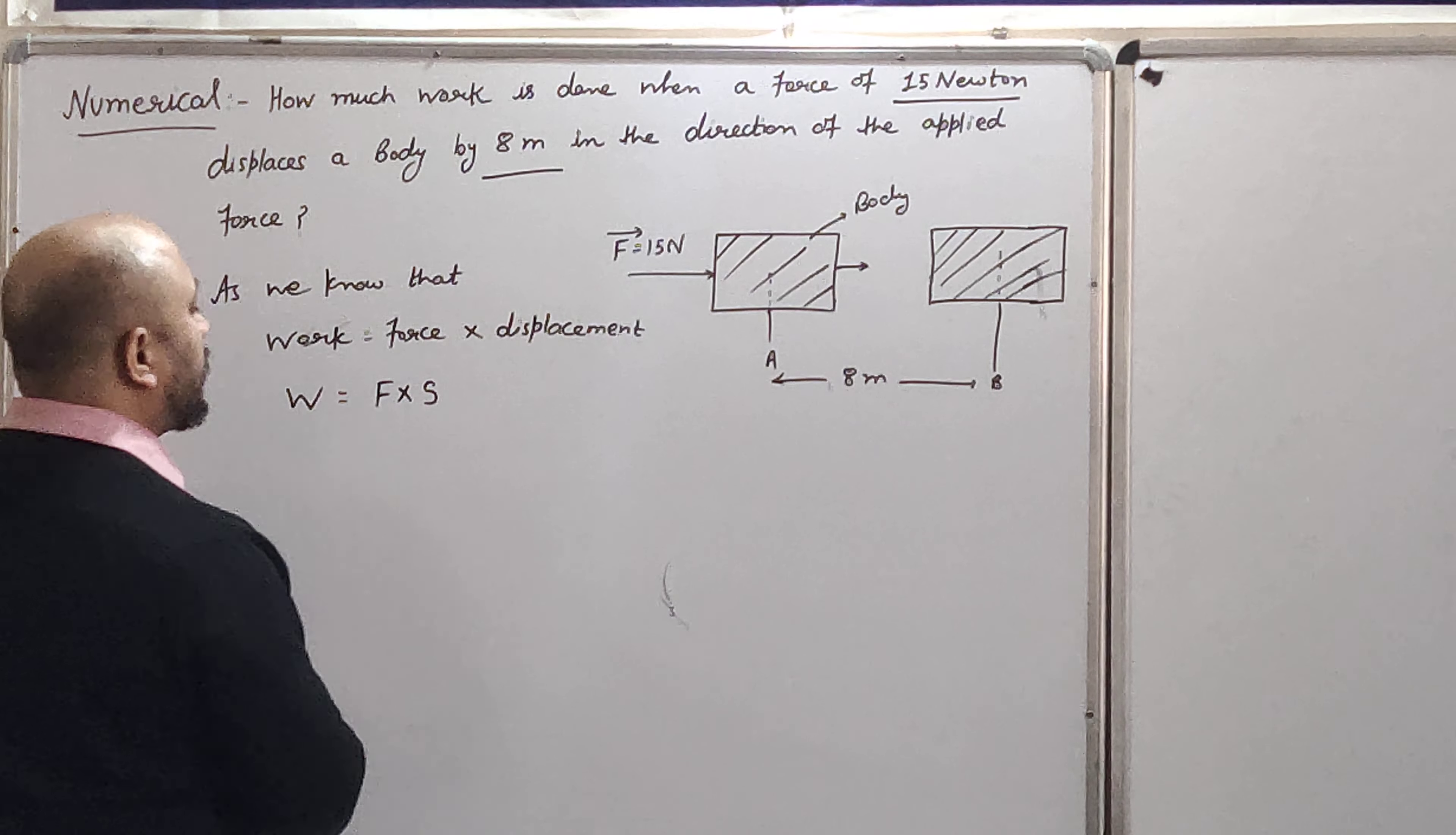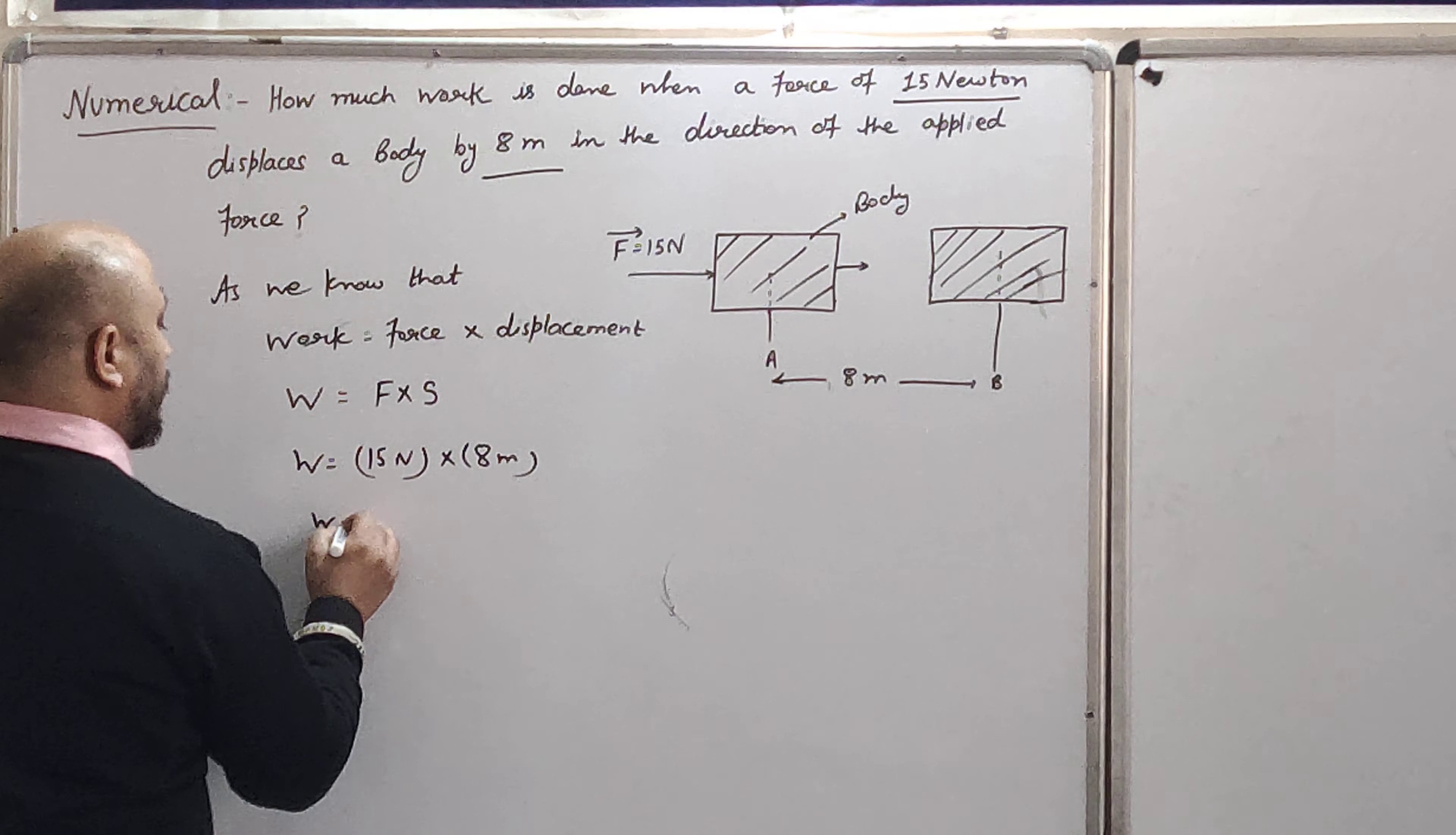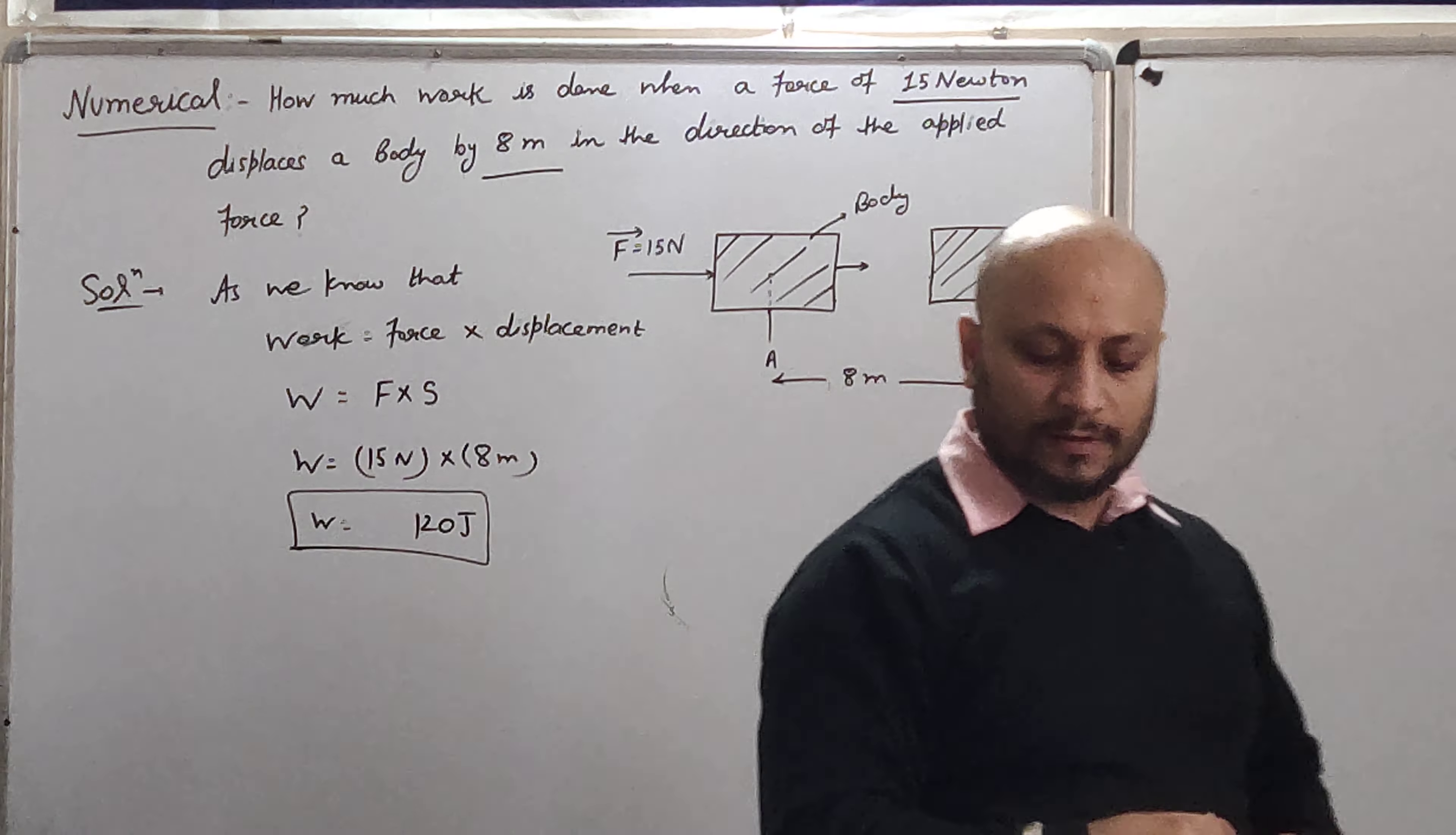Force कितना given आपको? 15 Newton. Displacement कितना given आपको? 8 meter. तो work कितना आगया आपके पास? 8, 5, 40... 120 J. इसका मतलब, कितना work आपको करना पड़ा? That is 120 J.